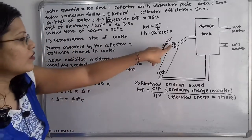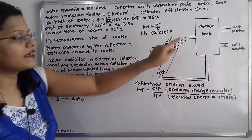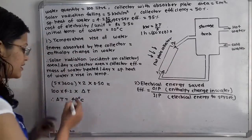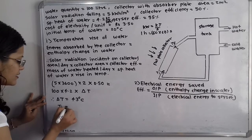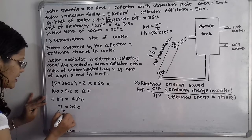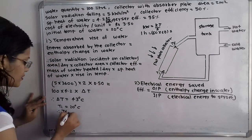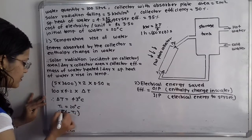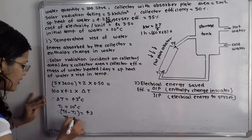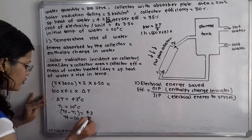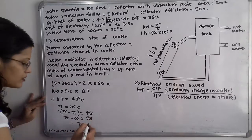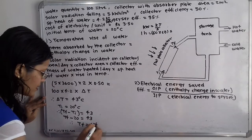Now how can we calculate the final temperature? We know the initial temperature of water is 20 degree Celsius, so T_I equals 20 degree Celsius. Therefore T_F minus T_I equals 43, so T_F minus 20 equals 43. Therefore final temperature T_F equals 63 degree Celsius.